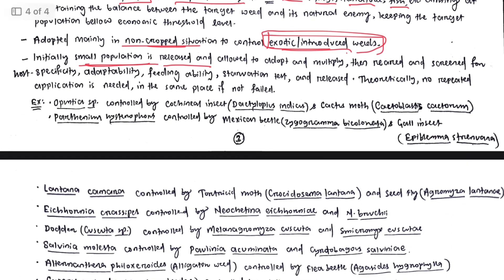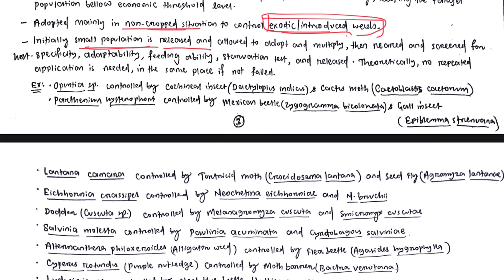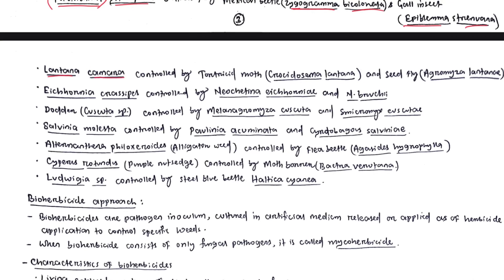Examples: Opuntia species is controlled by the cochineal insect Dactylopius indicus or by the cactus moth Cactoblastis cactorum. Parthenium hysterophorus is controlled by Zygogramma bicolorata or Epiblema strunwana. Lantana camara is controlled by Crocydozyma lantanae or Agromyza lantanae. Eichhornia crassipes (water hyacinth) is controlled by Neochetina eichhorniae or Neochetina bruchi. Cuscuta (dodder), a parasitic weed, is controlled by Melanagromyza cuscutae or Smicronyx cuscutae.